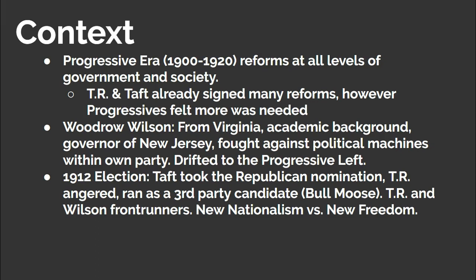The Democratic candidate for the presidency in 1912 was Woodrow Wilson. He was from Virginia and had an academic background, including being a professor and then president of Princeton University. Wilson went on to become governor of New Jersey, where he fought against political machines in his own party and drifted towards the progressive left. Wilson had the bona fides of being a Southerner, an academic, and a progressive. Former populists and Democratic leaders like William Jennings Bryan felt Wilson had a real chance of being the first Democrat in a long time to become president, so Wilson was nominated by the Democratic Party for the 1912 election.